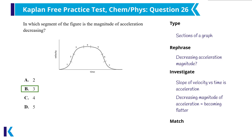Section five is the opposite of the correct answer. The slope of the line begins shallow and then becomes steeper, meaning that the magnitude of acceleration is increasing. The acceleration for section five is the most negative, because it indicates the only decrease in velocity in the range from section two to five. However, the question wants a decreasing magnitude of acceleration, not the most negative acceleration.